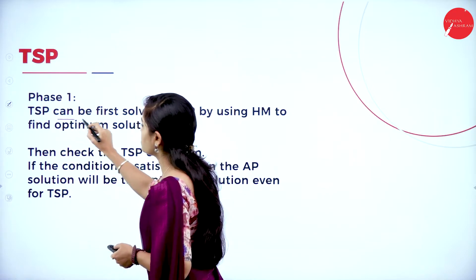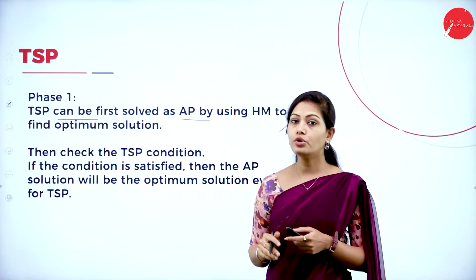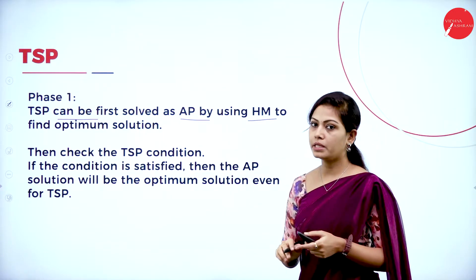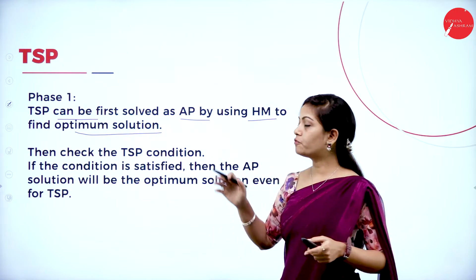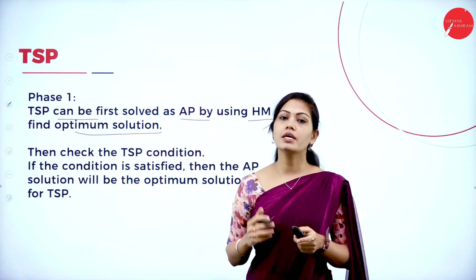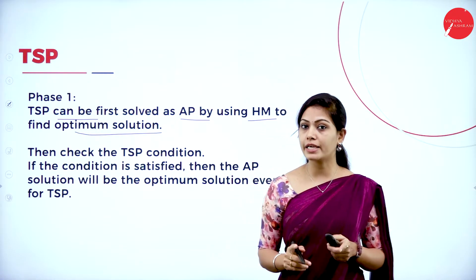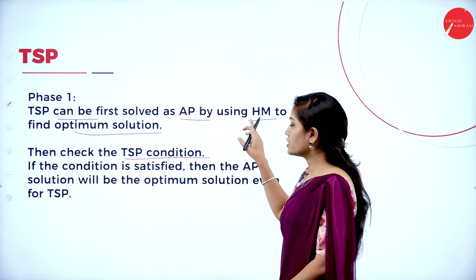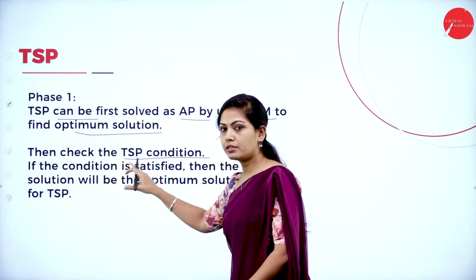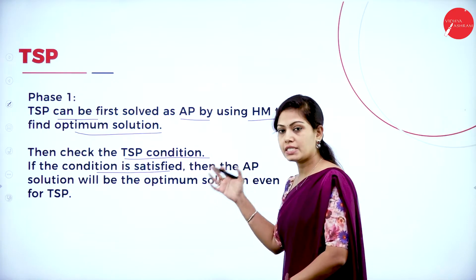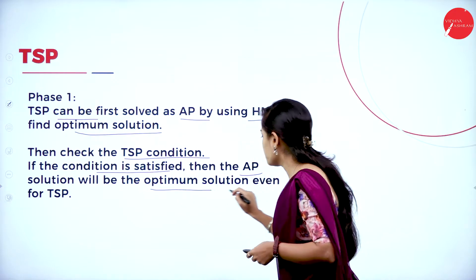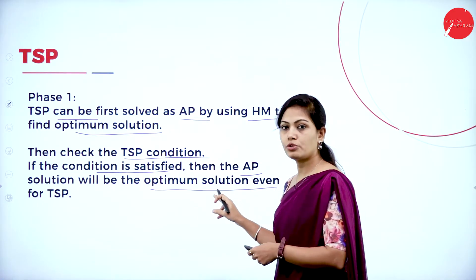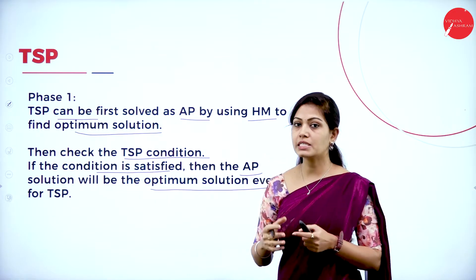In phase 1, the travelling salesman problem is first solved as an assignment problem. Those who have not seen the previous sessions on assignment problem should first learn the assignment problem by the Hungarian method to find the optimum solution. With the help of this assignment by Hungarian method we can solve the travelling salesman problem. Check the travelling salesman problem conditions after finding the Hungarian method solution. If the condition is satisfied, the assignment problem solution will be the optimum solution in the travelling salesman problem as well.